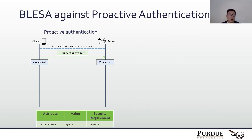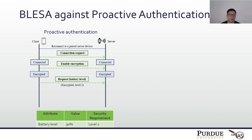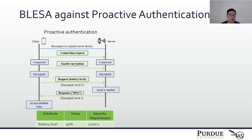Now I'll show how proactive authentication works and how BLISA can attack it. The client first sends the connection request to the server. But different from reactive authentication, the client tries to enable encryption right after the connection. Since both of them have the secret key, the encryption is enabled. Then the client sends the request for the battery level attribute at security level 2. The server checks the requirement and responds with the value of the attribute to the client, and the client accepts the value.